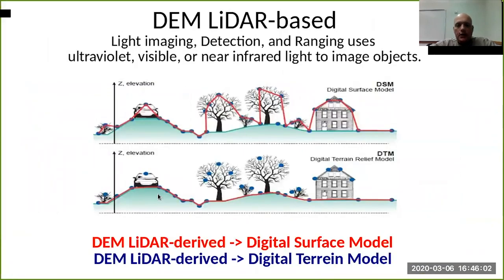Coming back to the digital elevation model, we can see two main differences: we can talk about the digital surface model — the red one — or we can talk about the digital terrain model. LiDAR is a ranging technology using ultraviolet, visible, or near-infrared light to image objects.